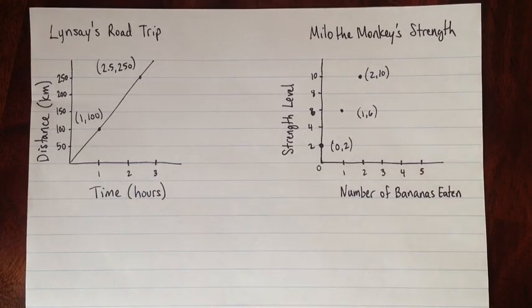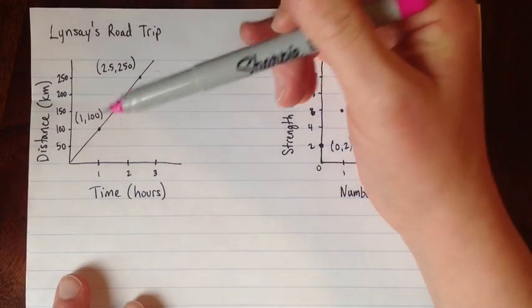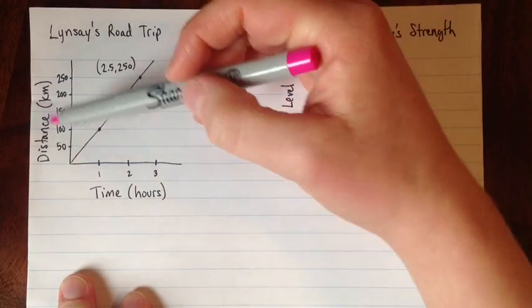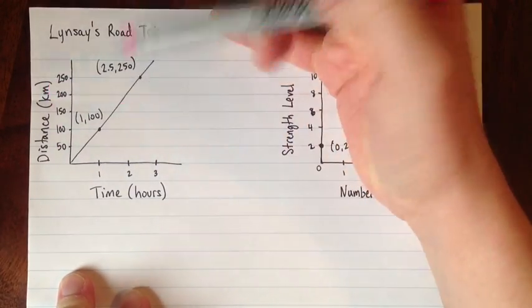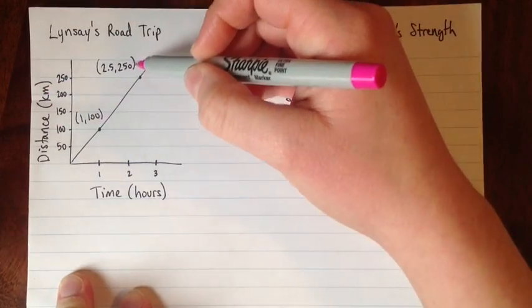Okay, so first example, Lindsay's on a road trip. We have a graph of the time in hours and the distance in kilometers at every time. So we've got two points here labeled.